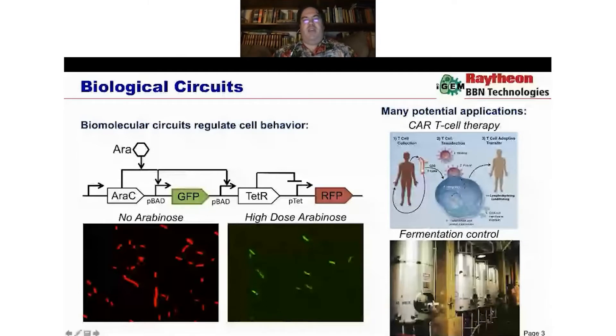Lots and lots of potential applications of these types of circuits. Some examples being CAR T-cell therapy. This is a cancer therapy where we engineer these immune cells called T-cells to attack specifically cancerous cells. And you have to have a little information processing circuit in there to make sure that your T-cell is attacking only the cancer cells and not other cells.